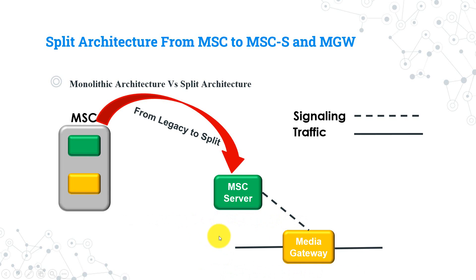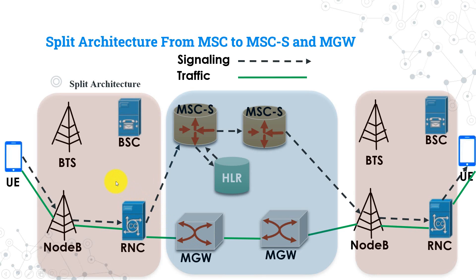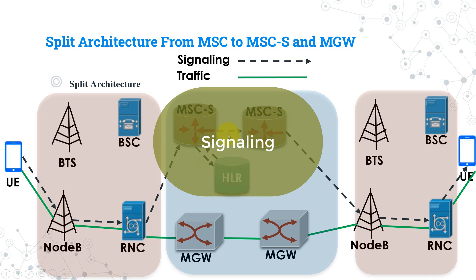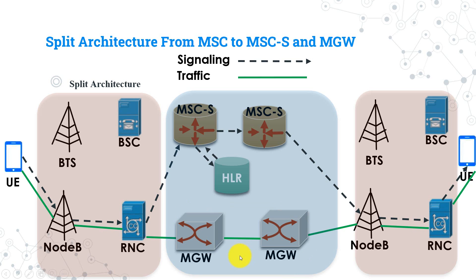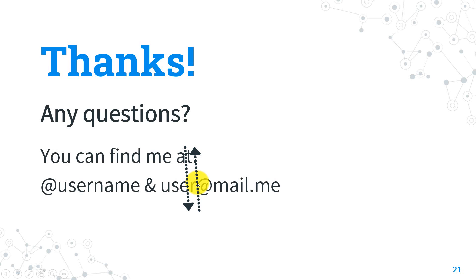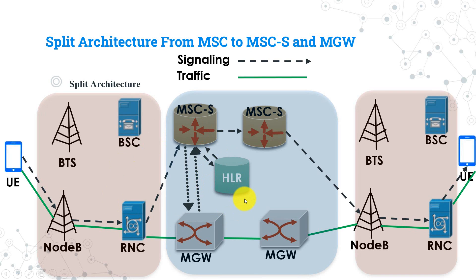Let's see how call flow is done in split architecture. Here we have the Media Gateway introduced. From the picture, you can observe that signaling messages pass along the dotted line, while user plane traffic passes along the solid line. In the split architecture, signaling messages are now handled in the core through the MSC Server, while traffic is handled in the Media Gateway. You can also see control messages between MSC Server and the Media Gateways, where MSC Servers send commands to Media Gateways to assign resources for user traffic. This transformation is what we call Split Architecture.